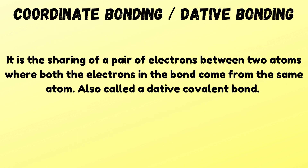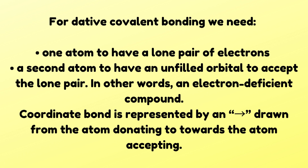The next type of bonding is coordinate bonding, also called dative bonding. It is the sharing of a pair of electrons between two atoms where both electrons in the bond come from the same atom. The requirements are: one atom must have a lone pair of electrons, and the other atom must have an unfilled orbital to accept that lone pair — in other words, it must be electron deficient. The coordinate bond is represented by an arrow from the donating atom towards the accepting atom.